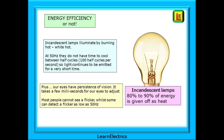Before we move on to LED lamps, let's take a look at incandescent lamps, which are not energy efficient. Incandescent lamps illuminate by burning hot — white hot. At 50 Hz, they do not have time to cool between half cycles, which is 100 half cycles per second. So light continues to be emitted for a very short time after the power is removed, and then the next half cycle arrives. Plus, our eyes have persistence of vision — it takes a few milliseconds for our eyes to adjust to any changes in light, and so most people cannot see a flicker. But there are some people who can detect a flicker as low as 50 Hz. And the big drawback with incandescent lamps: 80% to 90% of the energy used is given off as heat.